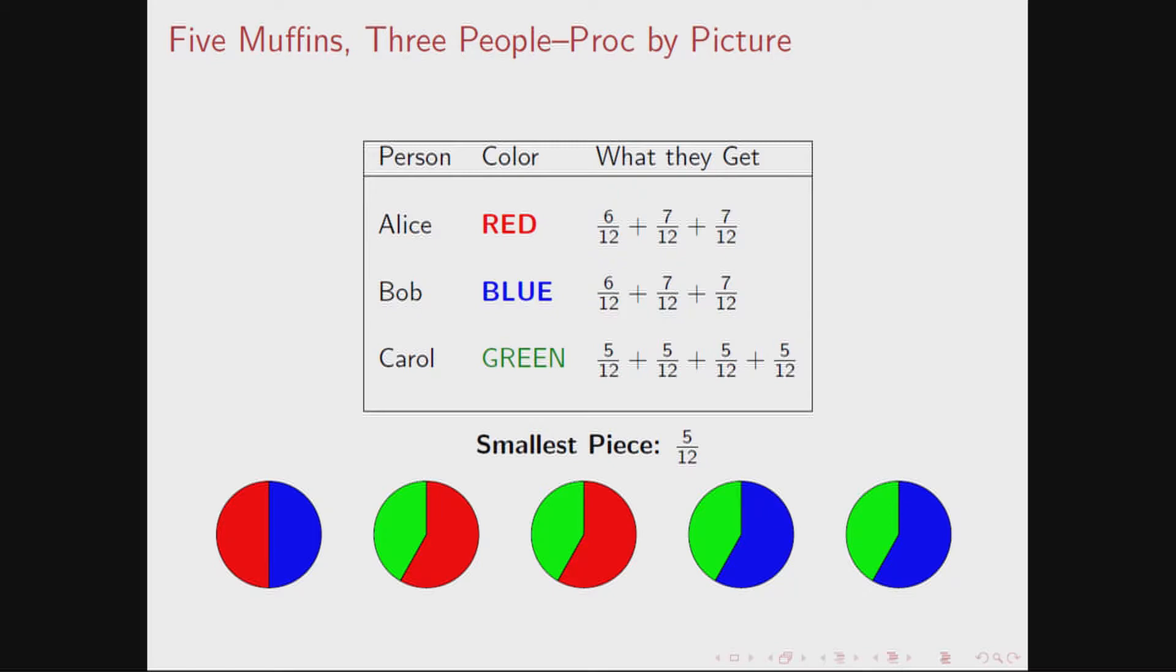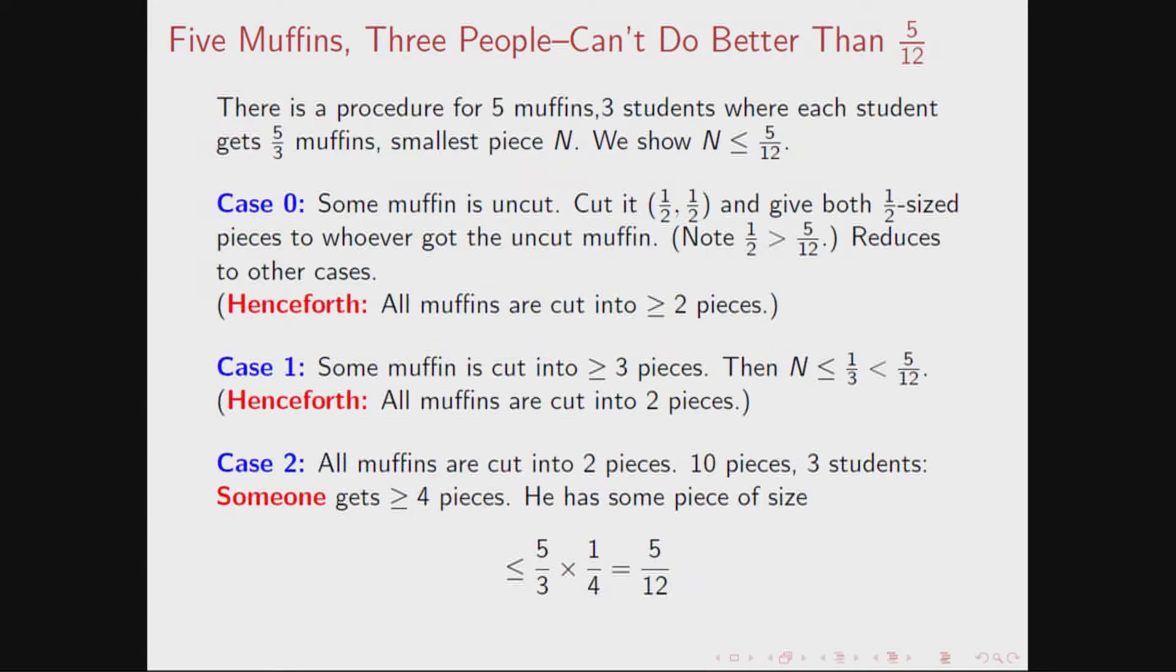Question arises, now the smallest piece is five-twelfths. Can you do better than that? You can't. It turns out that, briefly, you can assume that every muffin is cut in exactly two pieces, and therefore there are ten pieces total. If there are ten pieces and three students, some student gets four pieces.